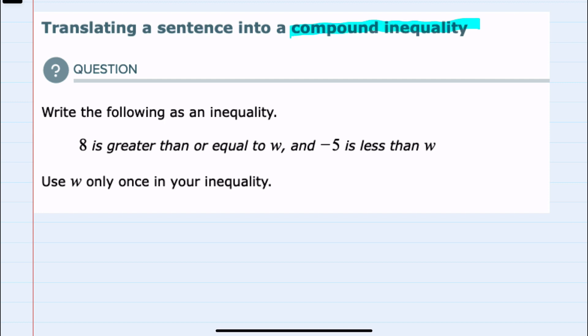So we're asked to write a compound inequality and we're told that 8 is greater than or equal to w and negative 5 is less than w.